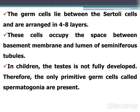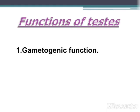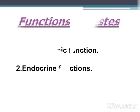These cells occupy the space between the basement membrane and the lumen of seminiferous tubules. In children, the testis is not fully developed; therefore only primitive germ cells called spermatogonia are present. With the onset of puberty, all stages of spermatogenic cells are present. Functions of the testis include a gametogenic function and an endocrine function.